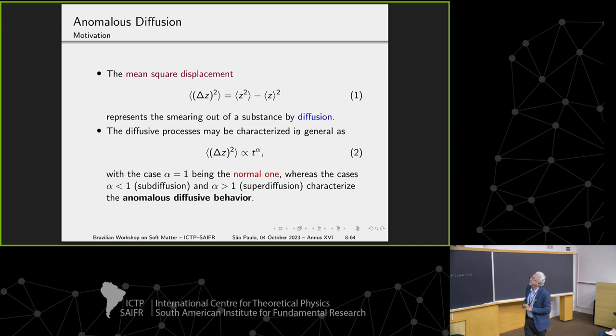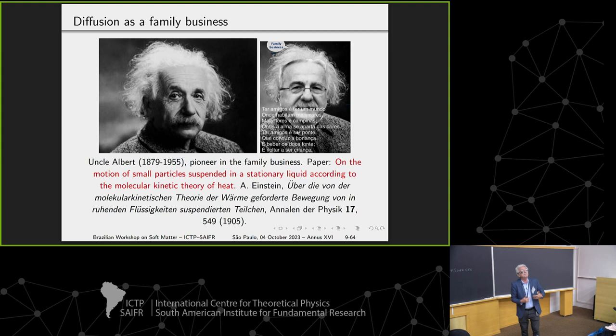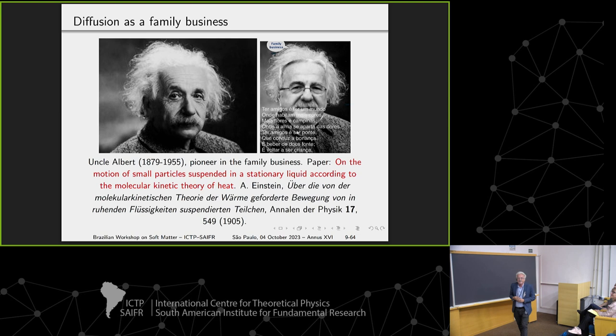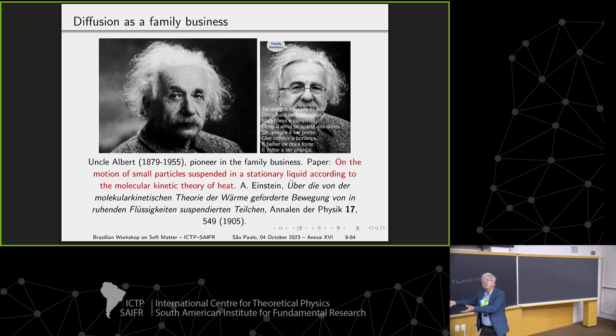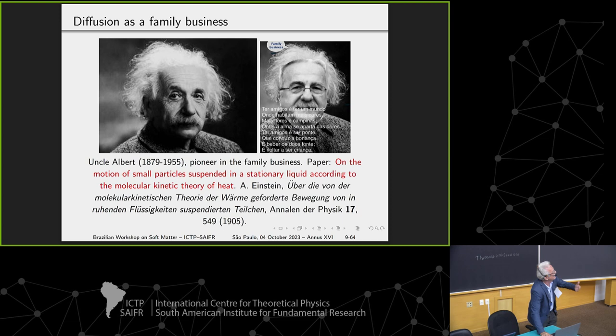Diffusion is a family business, because some very kind Uncle Albert started to describe it in the marvelous year. He was perhaps the first to give a good quantitative theoretical approach to the Brownian motion. We have to continue the family business at a very low level, of course. For this reason, we have to move to anomalous diffusion because the normal one he understood.